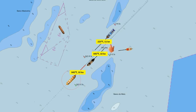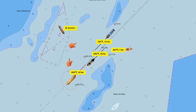This boat is proceeding on a course of 263 degrees true at 5 knots, and a fourth vessel is anchored. Additionally, buoys are positioned on both sides of the two-way traffic lane.